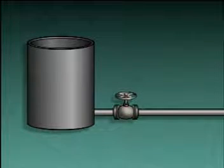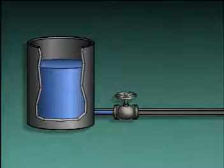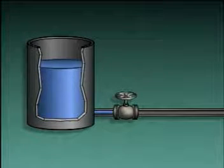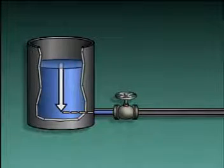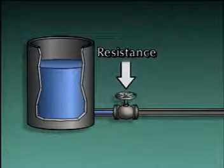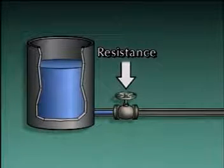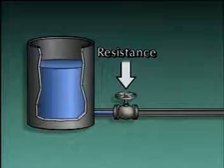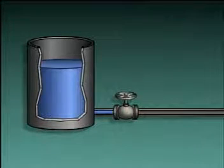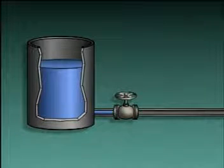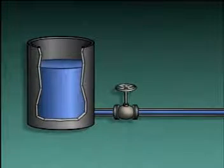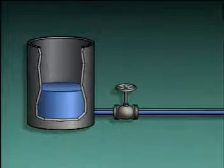For example, in this simplified liquid system, a container serves as a reservoir for the liquid. The energy for the system is the liquid's head — that is, the pressure caused by the depth of the liquid. The resistance in the system is caused primarily by a valve that opposes the flow of liquid from the container. When the valve is closed, the resistance is high and there's no flow. But if the valve is opened, the resistance or opposition to flow decreases and liquid flows from the container.